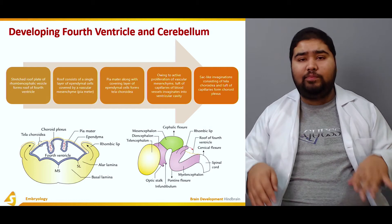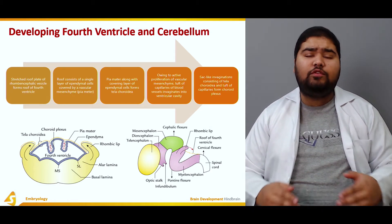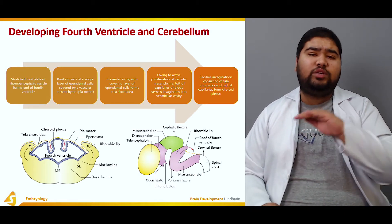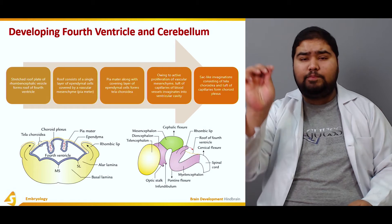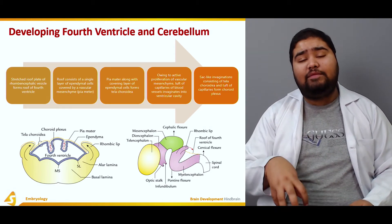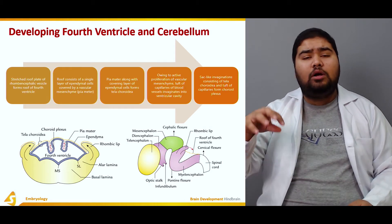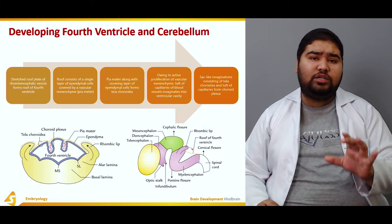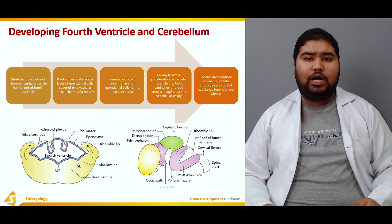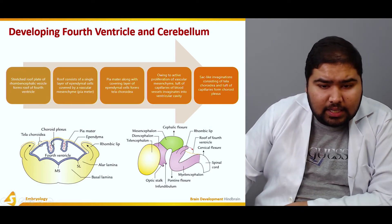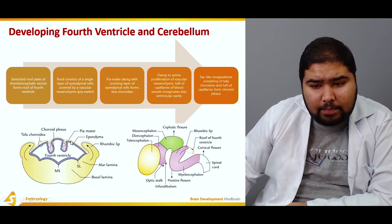The choroid plexus forms as follows: the roof of the rhombencephalon, consisting of a single layer of ependymal cells covered by pia mater mesenchyme, undergoes rapid proliferation of blood vessels which penetrate into the cavity of the fourth ventricle. These tela choroidea-covered projections of tufts of capillaries into the fourth ventricle are the choroid plexus. In the figure you can see the choroid plexus, the tela choroidea, the ependymal layer, and the pia mater.